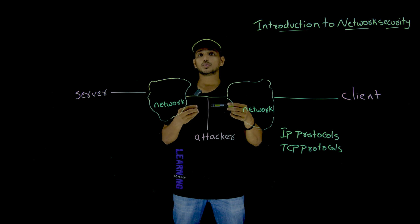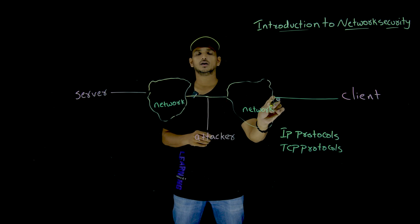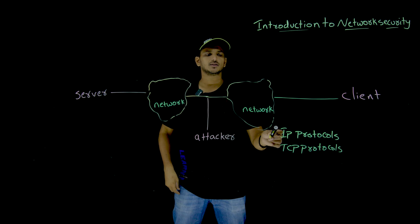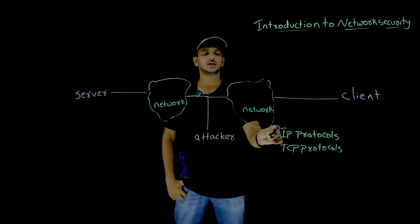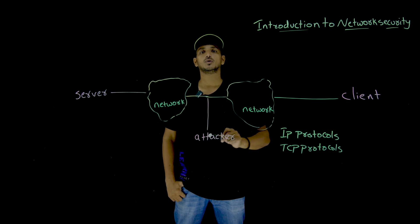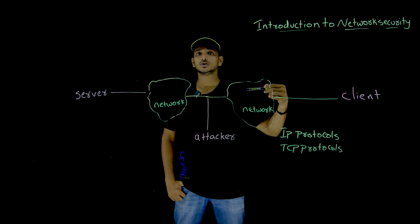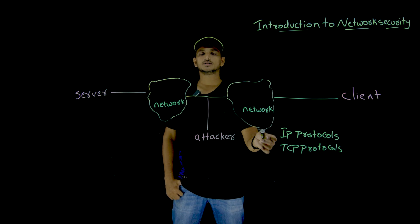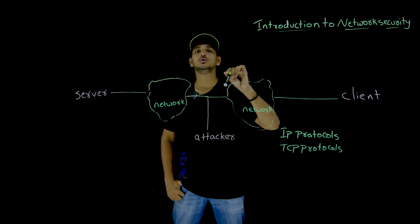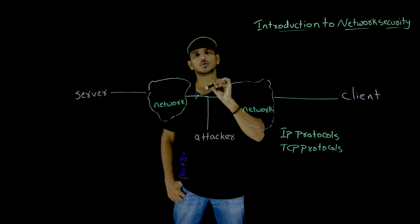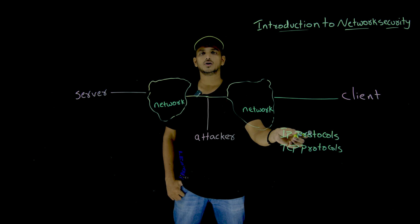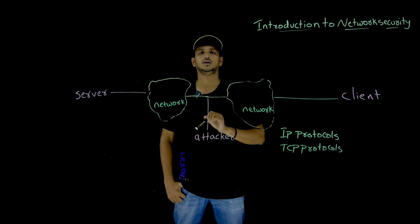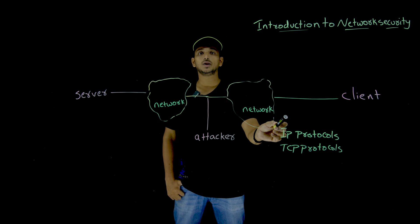In order to provide security over the internet, here is a good intuition. We have IP protocols — meaning network layer protocols. Similarly, TCP layer protocols, application layer protocols, and data link layer protocols. Above the TCP protocols, we add new protocols that provide security — new TCP security protocols. Similarly, above the network layer protocols, we add new network layer protocols that provide security, and similarly for data link layer and application layer protocols.